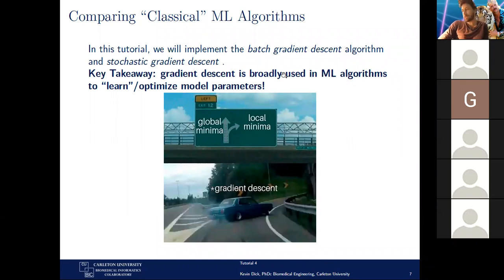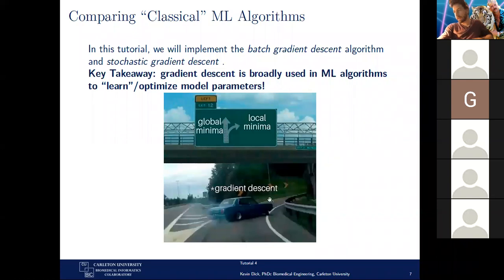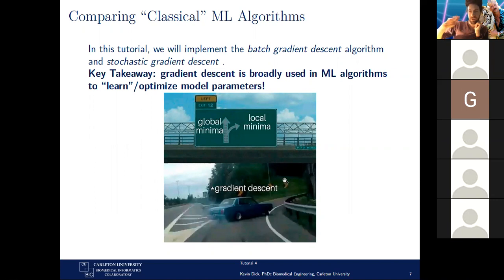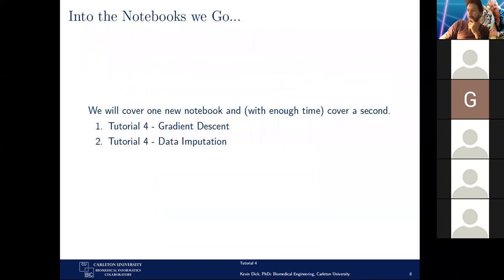In the first notebook we'll implement batch gradient descent and stochastic gradient descent. Gradient descent is broadly used in machine learning to learn parameters. Depending on how you parameterize it, you can get stuck in a local minimum — ideally we want the global minimum where error is lowest. We just hope that we set up gradient descent in a way that gives it the best possible chance to minimize that error.